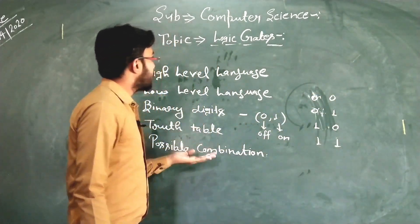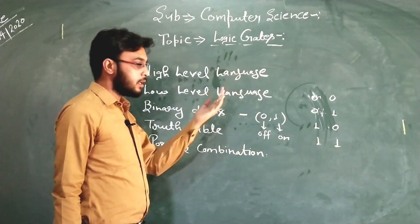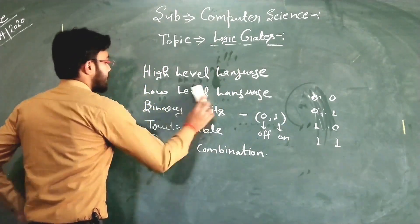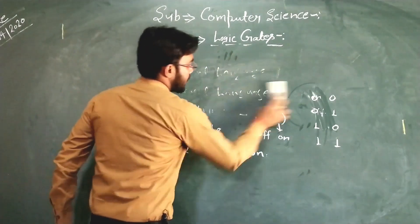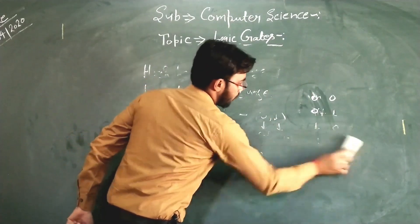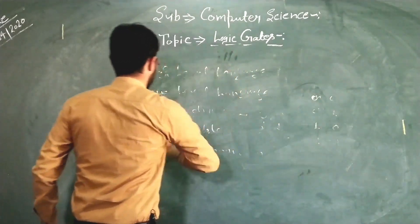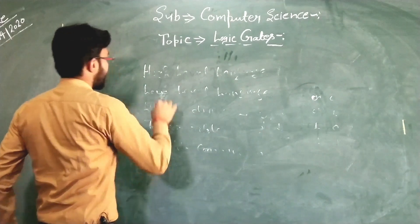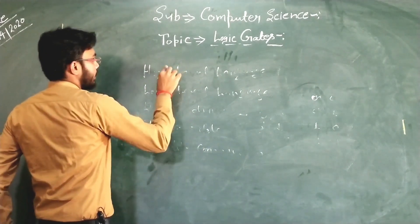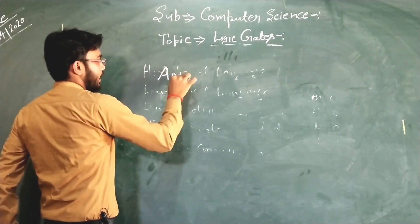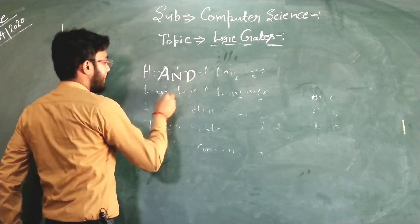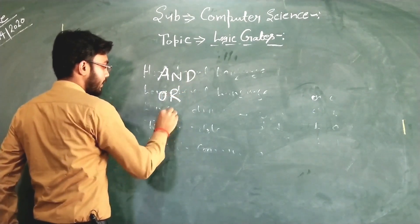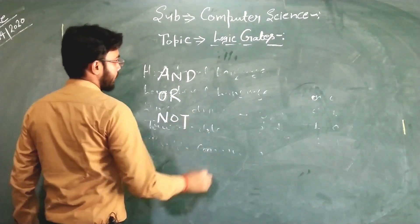Now I am going to explain the logic gates. We will talk about the basic logic gates. There are basically three gates: AND gate, OR gate, and NOT gate.